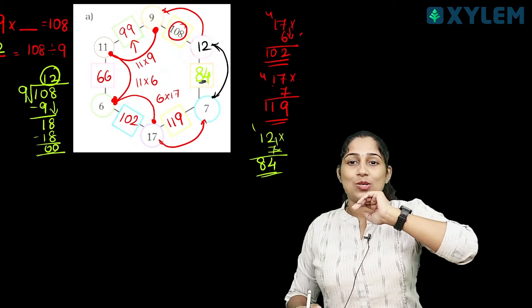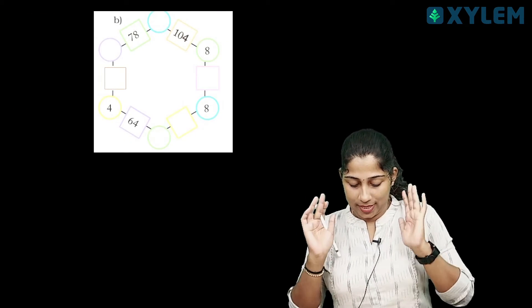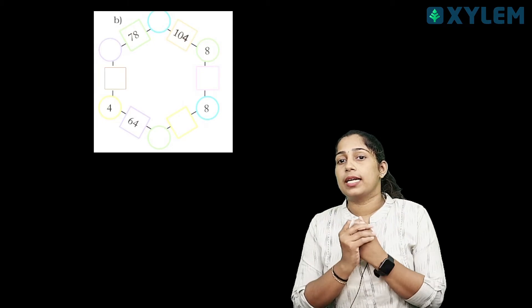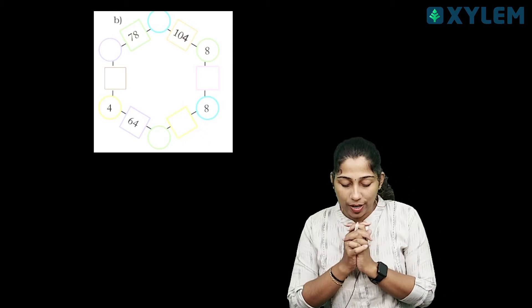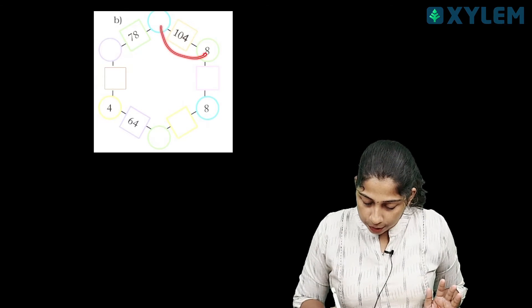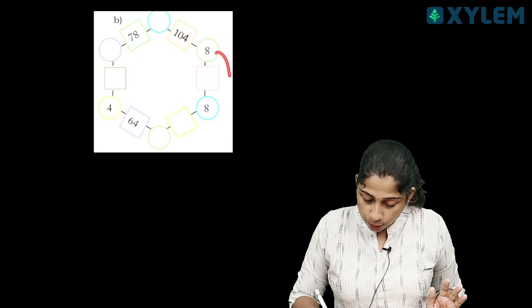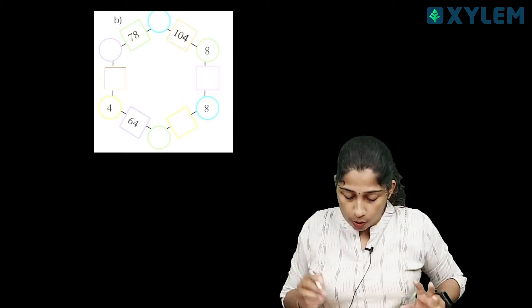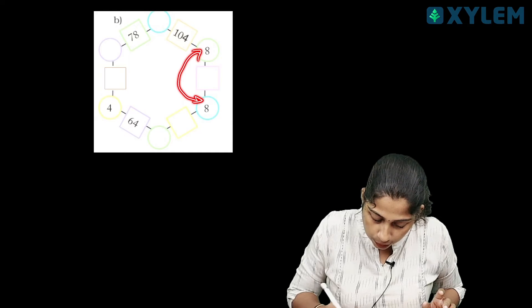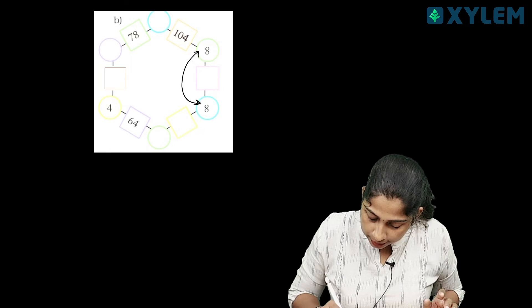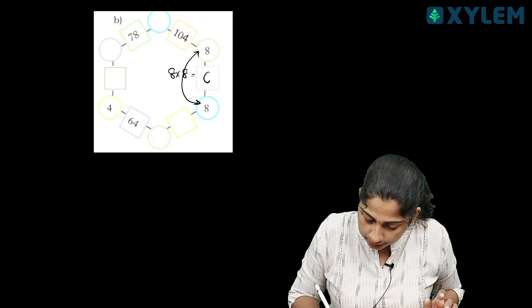This is the second question. How do you solve this problem? If you have a hexagon, we don't have a value in the hexagon. We don't have a value in the two circles. Here we have 8 and here we have 8. We have a value here and here. How do we find the value? That is 64.